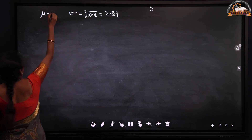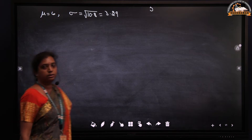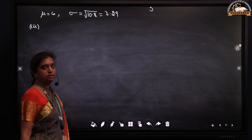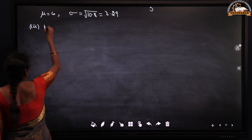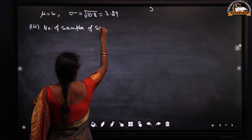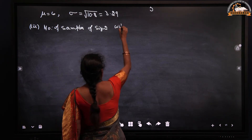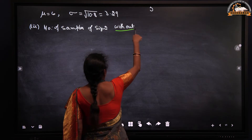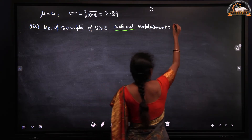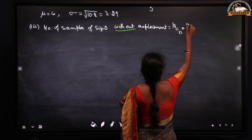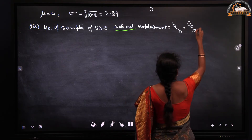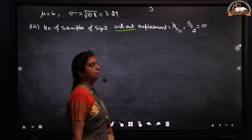So we got mu equal to 6 and sigma equal to 3.29. Before finding the mean and standard deviation of the sampling distribution, we have to find all the possible samples. Since we are considering sampling without replacement, the number of samples of size 2 is given by N-choose-n, which is 5C2, equal to 10. So we will get 10 samples without replacement.